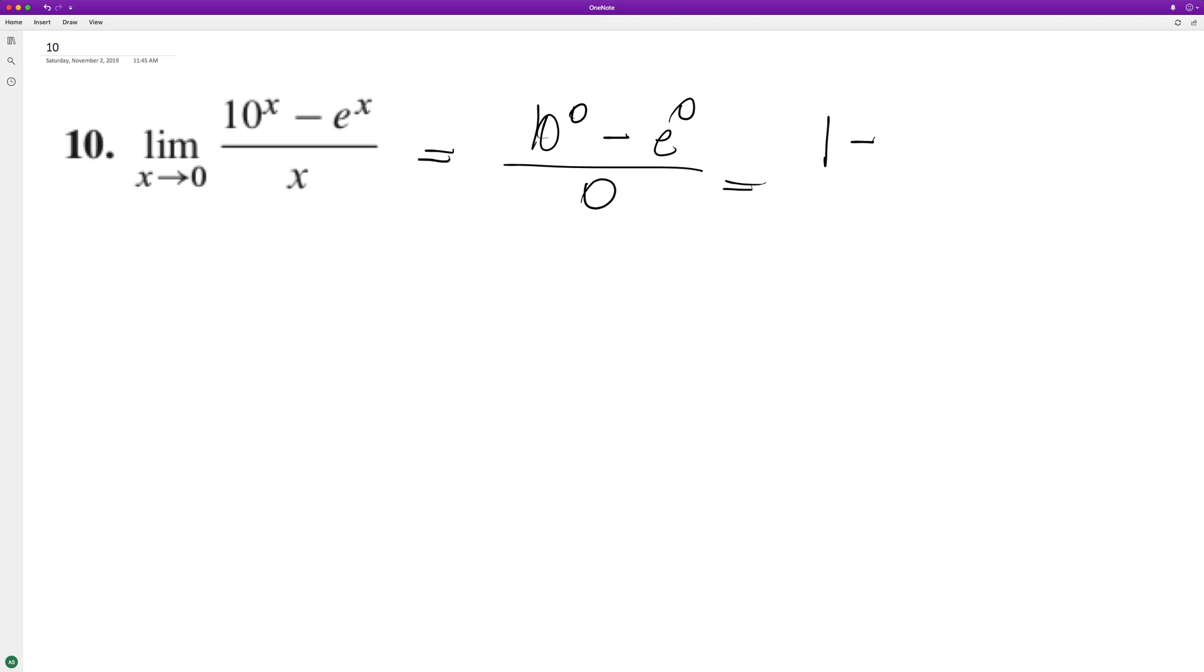Anything raised to the zero is one, so we get one minus one over zero, which is equal to zero over zero. Well, that's a problem because that's an indeterminate.